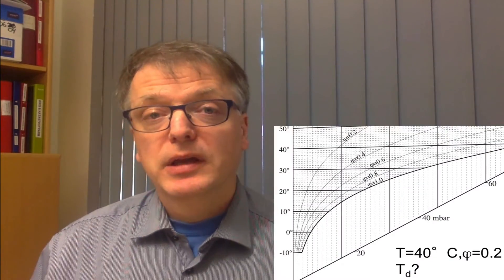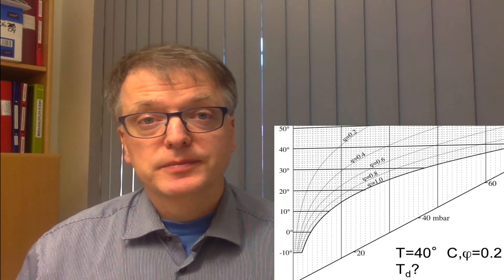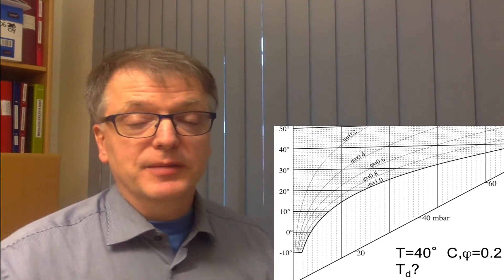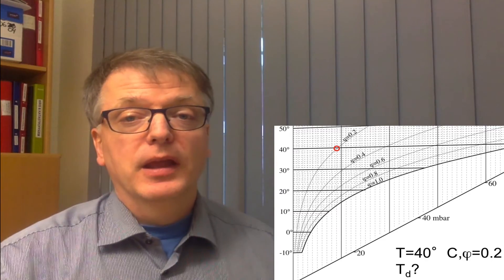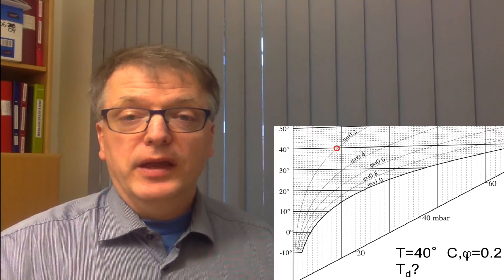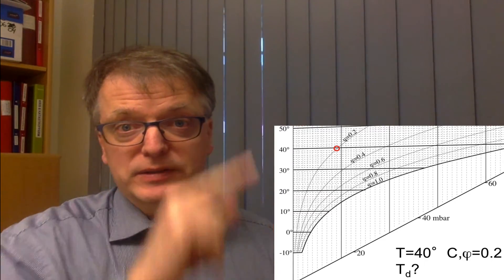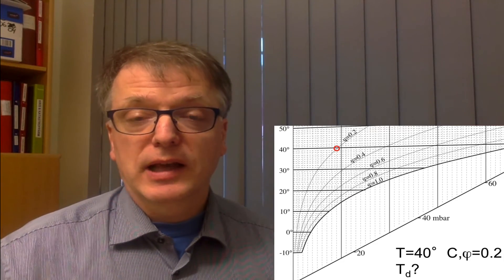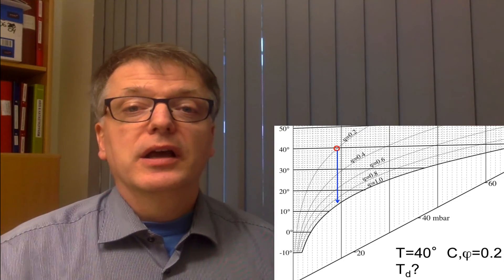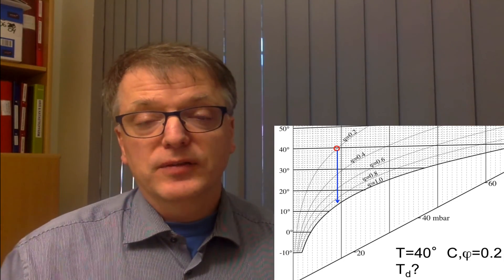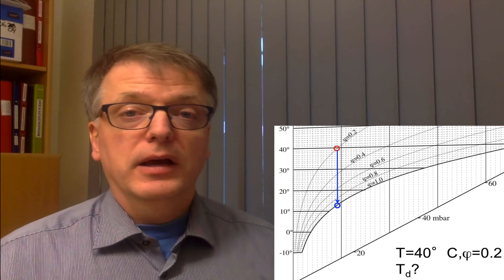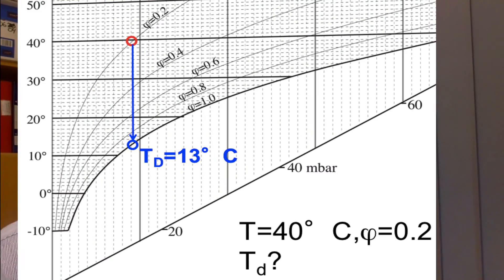Let's take an example. You have an air that is 40 degrees Celsius and has a relative humidity of 0.2. What is the dew point? Well, first you need to find the point in the diagram, so it's there. And then you go along the same water content line until you reach the 100% relative humidity. And then you find the dew point.